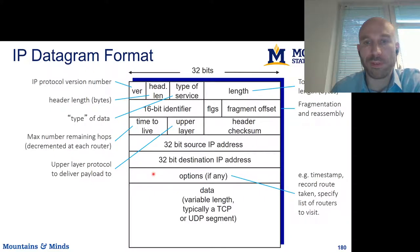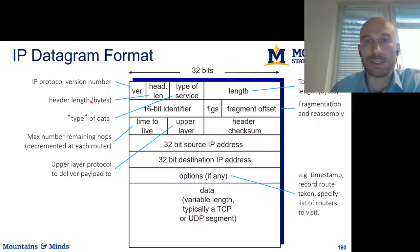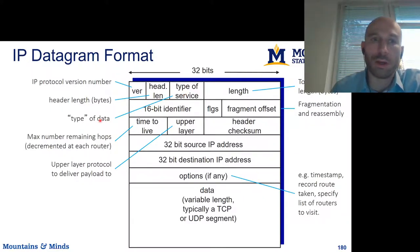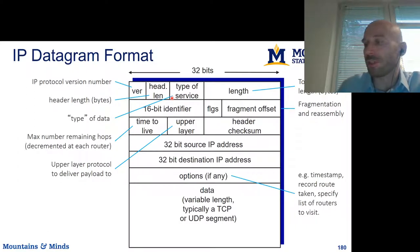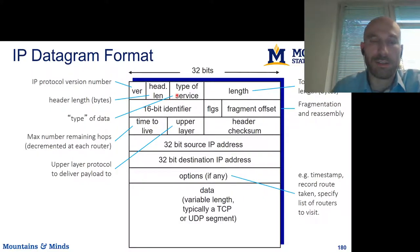The uncertainty in header length comes from the fact that there are options potentially included in this header, and so we want to delineate where the header ends and the data begins. Then we have the type of service being carried, which is really the priority of the packet — used in DiffServ or IntServ. You can think of it as a kind of priority of data.